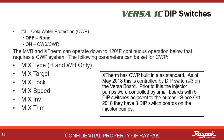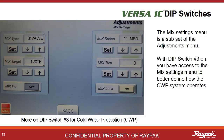Dipswitch number three turns on the cold water protection options. This family of boilers requires a minimum inlet temperature of 120 degrees Fahrenheit. The Xtherm has cold water protection as a standard feature. These menu items become available with Versa Dipswitch number three activated. With Dipswitch number three on, this menu will be available in the adjustment section. This is where you make changes to the cold water protection settings.